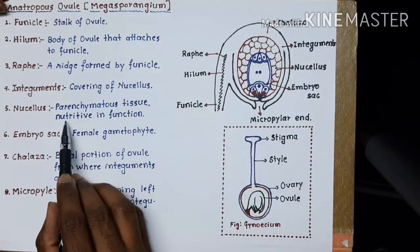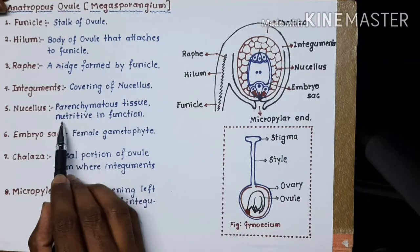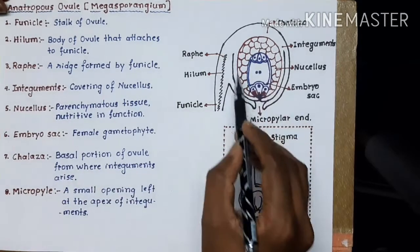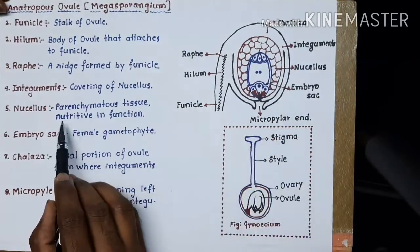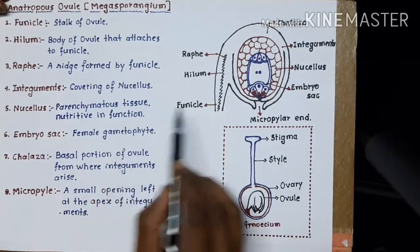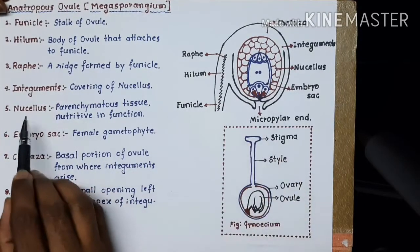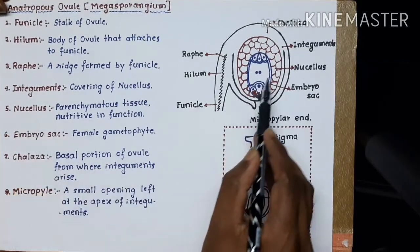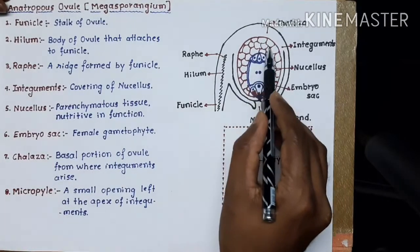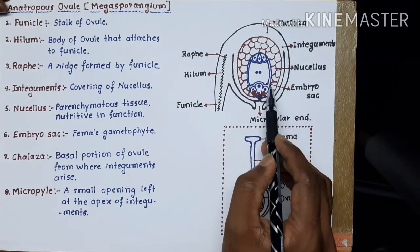Well inside the integuments there is a parenchymatous tissue which is nutritive in function. This tissue stores reserved food material — that's why it is called nutritive in function. This parenchymatous tissue present well inside the integuments is known as the nucellus.